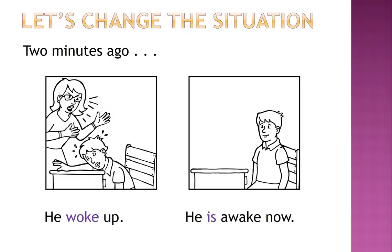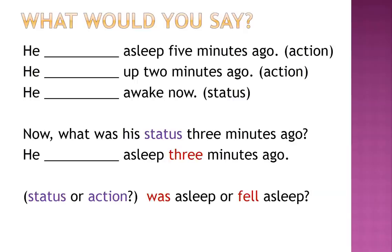Let's change the situation. Two minutes ago, he woke up. He is awake now. 'He woke up' is the action. 'He is awake' is the status. What would you say in these sentences? He fell asleep five minutes ago — use the action verb. He woke up two minutes ago — action. He is awake now — status.